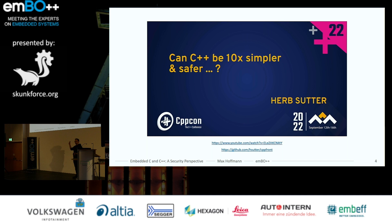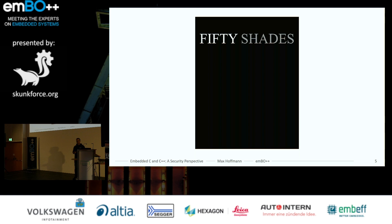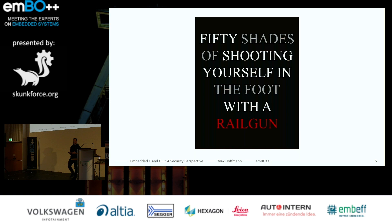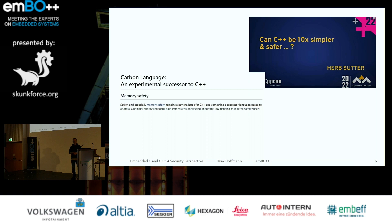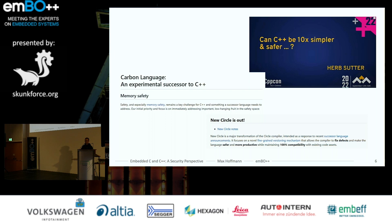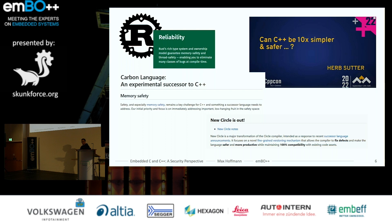I recommend watching this talk, because with C and C++, we have one big problem. If we are not very, very careful, working with C and C++ is like 50 shades of shooting yourself in the foot with a railgun. This can quickly escalate — not just in terms of bugs and functionality problems, but really in terms of security. There's a lot of progress happening: the talk by Herb Sutter on whether C++ can be 10 times simpler and safer, the Carbon language, the Circle compiler, and other languages like Rust, which have safety as one of the key arguments.